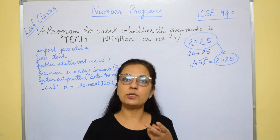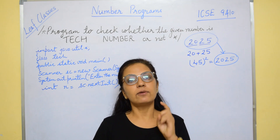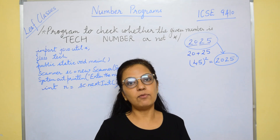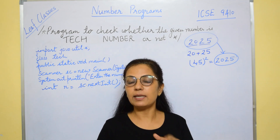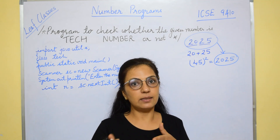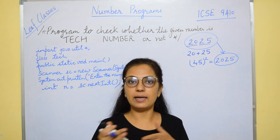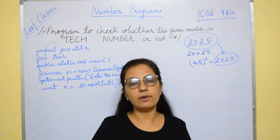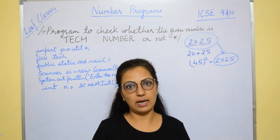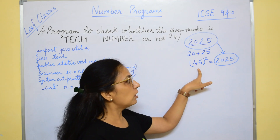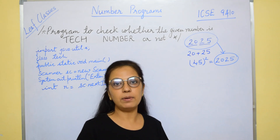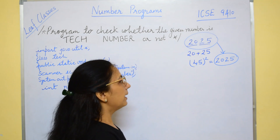What we have to check first is whether the count of digits is even or not. If it is even, then only we will proceed to check the left and right parts, the sum, and the square. If it is not even, we will directly print that it is not a tech number. Also, if the square of the sum is not equal to the entered number, then it is not a tech number.